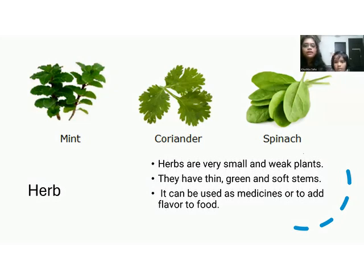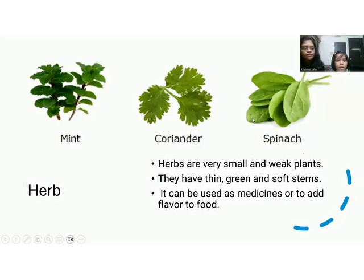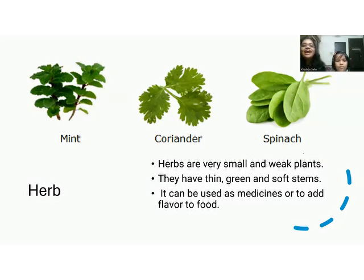Herbs are very small and weak plants. They have thin, green and soft stems. Advika, can you tell me the names of these plants on the screen? The first one is mint, the second one is coriander, and the third one is spinach. We use mint to add flavor in our food. Coriander is the same. These are all herbs.